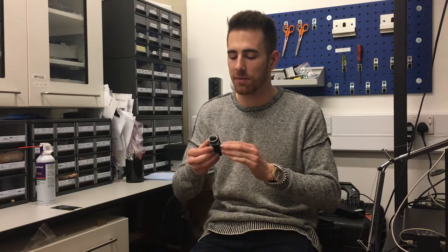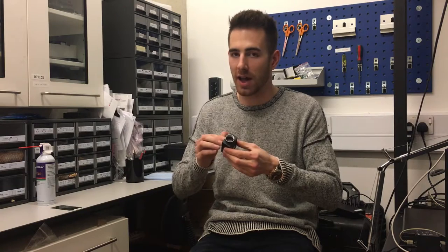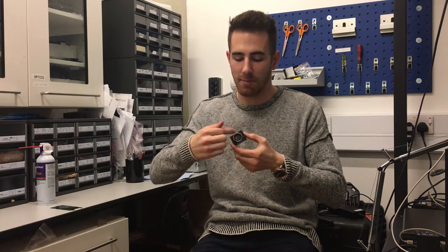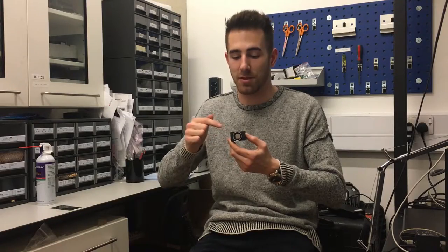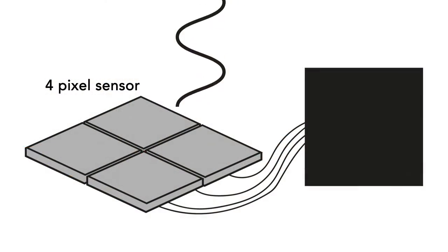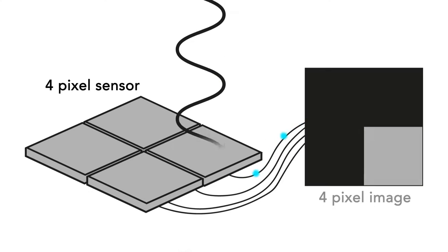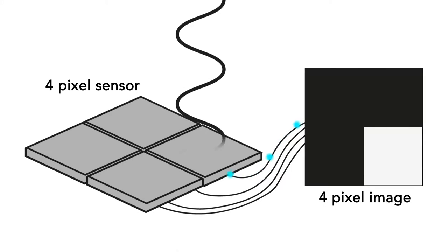To help us understand how that works, we can first look at how cameras work. I've got a camera here, and if we look into it where the light would enter, you can see there's a flat shiny surface — that's the sensor. That's the part of the camera that turns the incoming light into an electrical signal which we can send to a computer to form an image. If you could look at that sensor really closely, you'd see a grid pattern, and each square in that grid is what we call a pixel. Each pixel detects the light, turns it into an electrical signal, and that becomes one point in our final image.